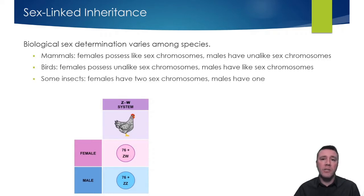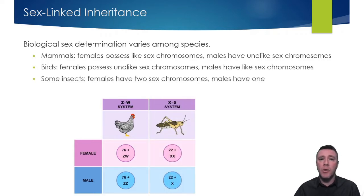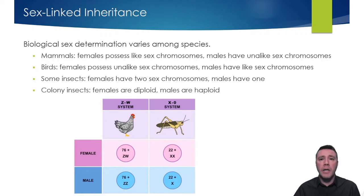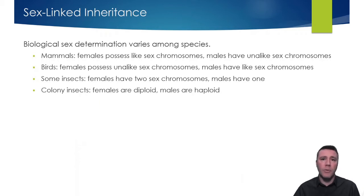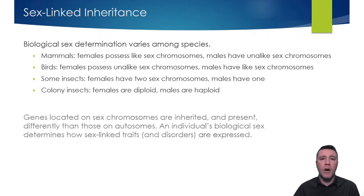In some insect species, the X0 system determines an individual's biological sex. Females carry two sex chromosomes, whereas males only have one. In many colony species of insect, like bees and ants, females are diploid and males are haploid. For genes that are found on sex chromosomes, inheritance patterns differ from those found on autosomes.